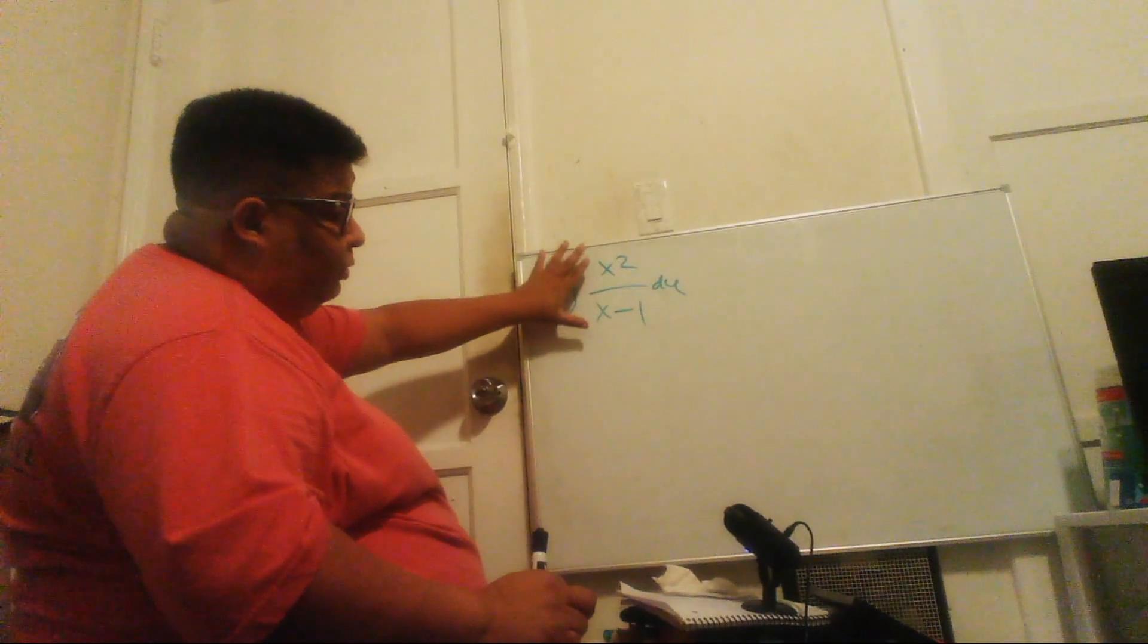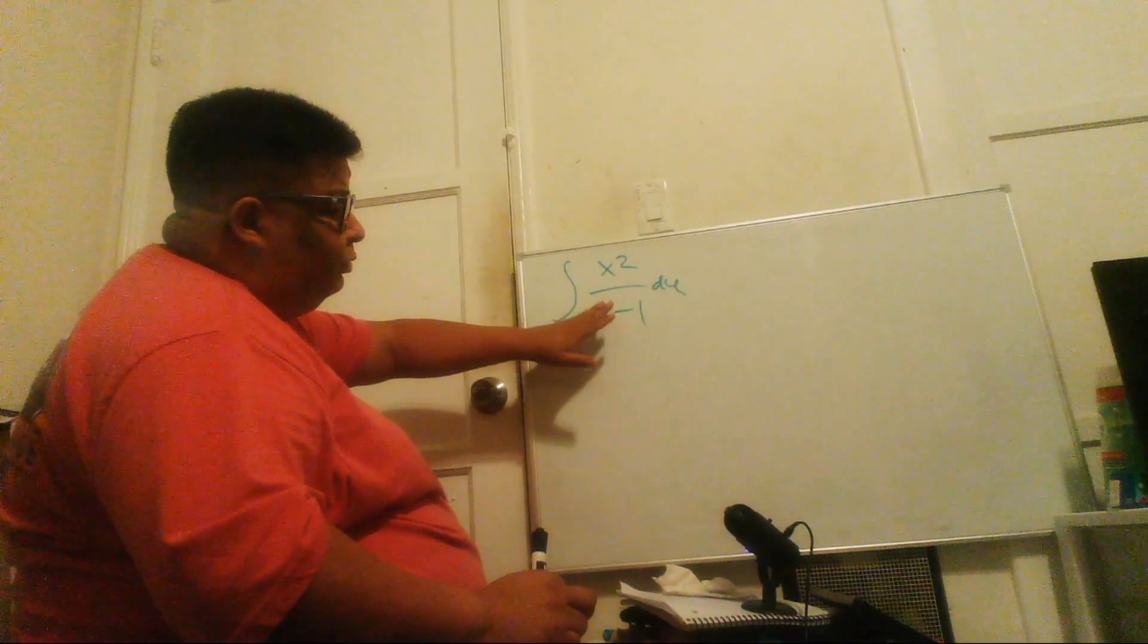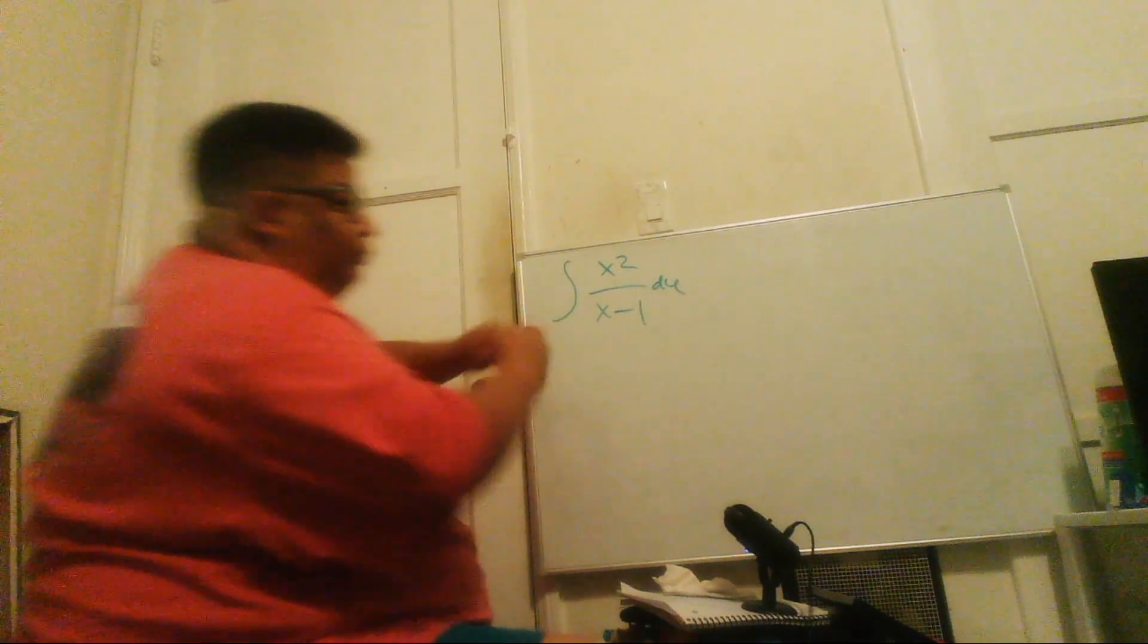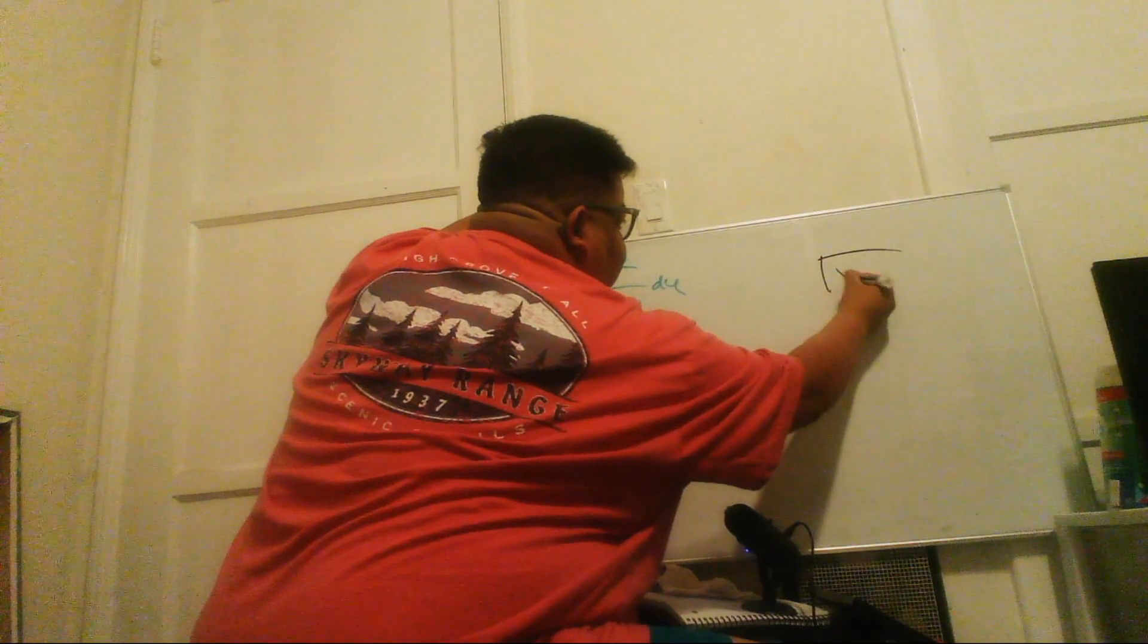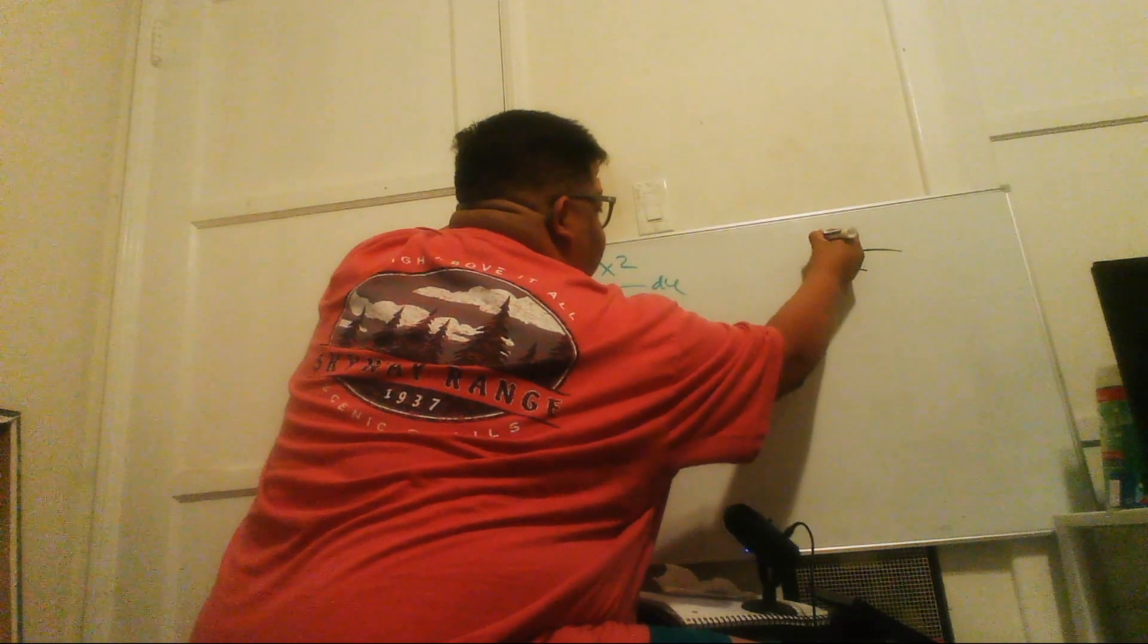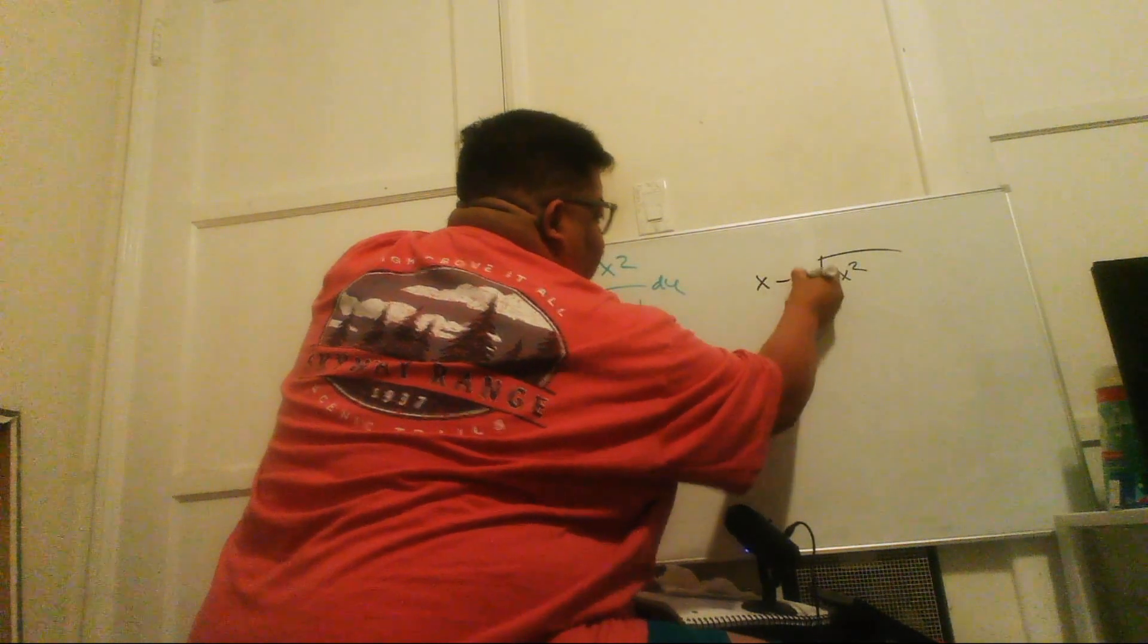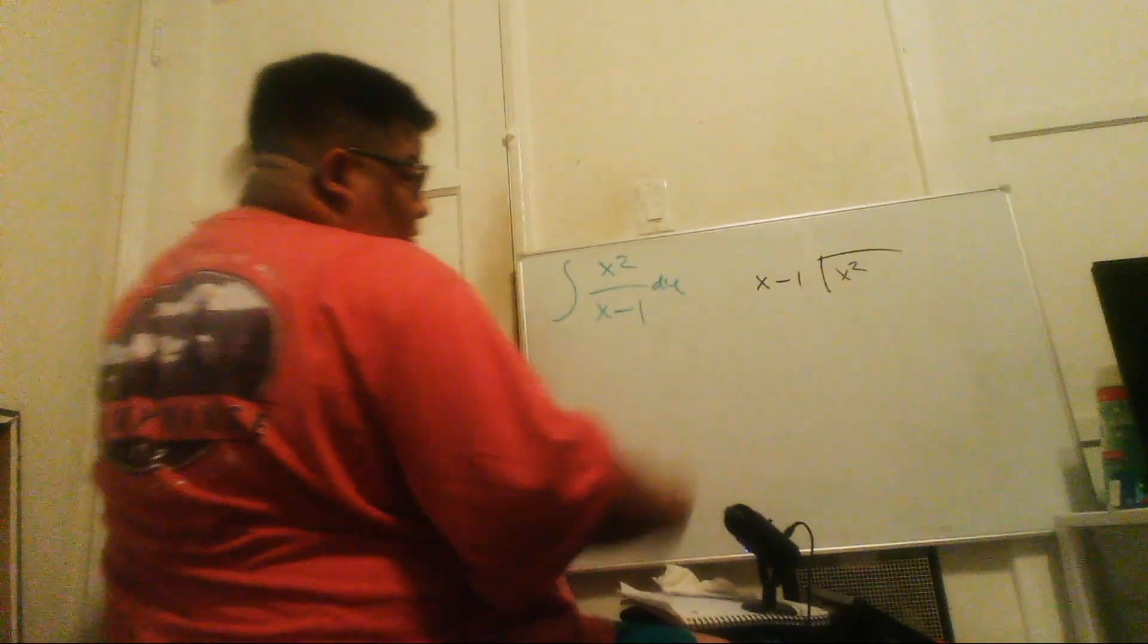What I suggest to do is, because this is a rational function, we're going to divide the top by the bottom. So let's do it on the side. So it would be x squared and then x minus 1.